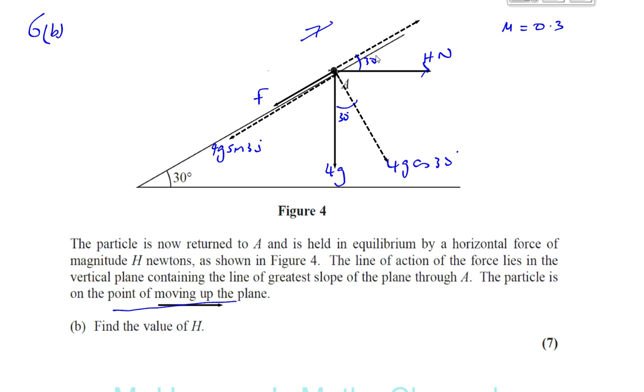And we also have to resolve this H newtons perpendicular and parallel to the plane as well. So this is going to have a component parallel to the plane acting up. Now it's the same angle 30 here. This is 30 degrees because this is like a corresponding angle. So this is going to be H times, because you're going into the angle, cosine 30 degrees. And it's also going to have a component acting perpendicular to the plane. So we'll draw like this, and that's going to be H because you have to move away from the angle given. This will be H times sine of 30. So now we have all the forces acting.